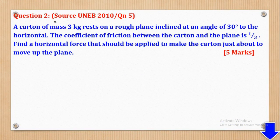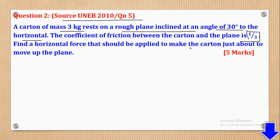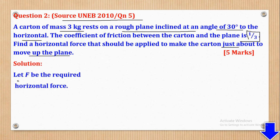Now we shall go to question 2, which came from UNEB 2010, paper 2, question 5. It says: a carton of mass 3 kilograms rests on a rough inclined plane inclined at an angle of 30 degrees to the horizontal. The coefficient of friction between the carton and the plane is 1 over 3. Find the horizontal force that should be applied to make the carton just about to move up the plane — 'just' means it has not yet moved but is at the point of moving. Let F be the required horizontal force.